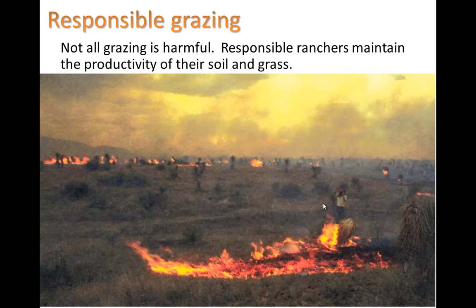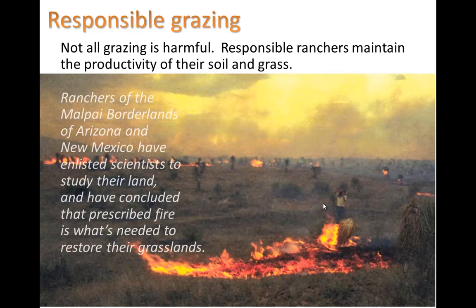Not all grazing is harmful. Responsible ranchers can maintain the productivity of their soils and grasses. For example, ranchers in the Malpi borderlands of Arizona and New Mexico have enlisted scientists and concluded that prescribed fire is needed to restore the grasslands — similar to what the native Chumash Indians used to do. Native plants are tolerant to wildfire; their roots stay alive and regrow afterward. Fires burn out non-native species, and the residue left from burning improves soil nutrients in good mineral form.